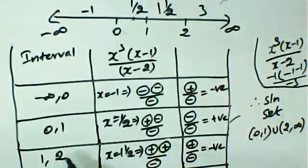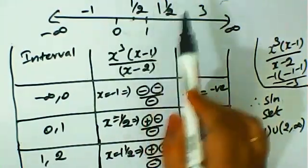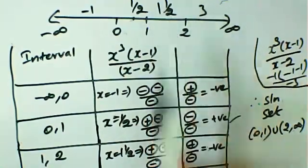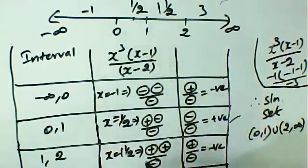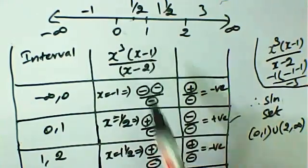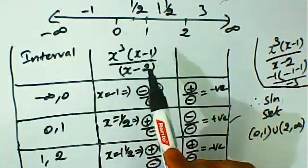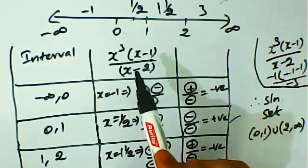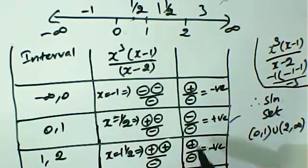For the interval 1 to 2, we choose x equals 1.5. We substitute 1.5 into the expression. x cubed is positive, x minus 1 is positive (0.5), but x minus 2 is negative (minus 0.5). So the overall sign is negative.